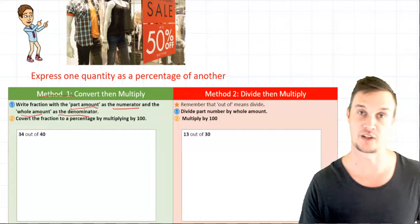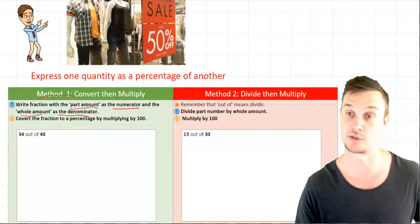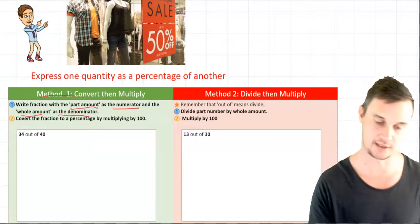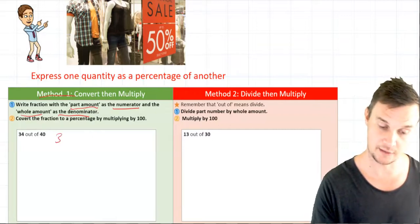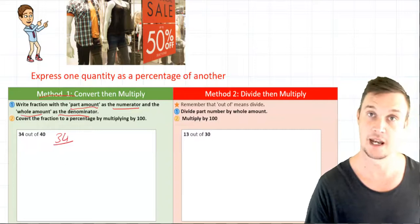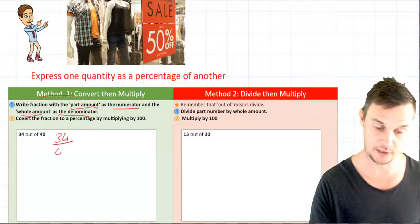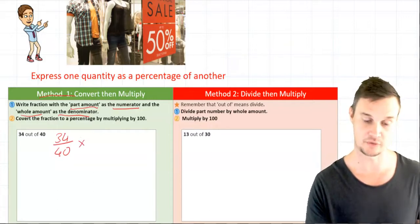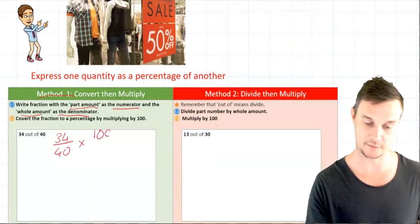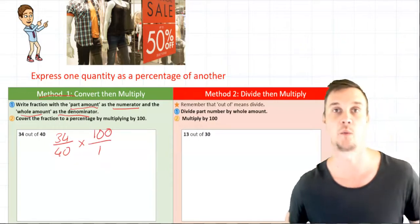From there you're going to convert it to a fraction and then multiply it by 100, which is also a fraction. So what that looks like is this. So here we have 34 out of 40. So the part amount is 34 as the numerator and the whole amount is out of 40, which is the denominator. So now I have a fraction and I'm going to multiply that by 100, and if we had to write that as a fraction it is 100 over 1.